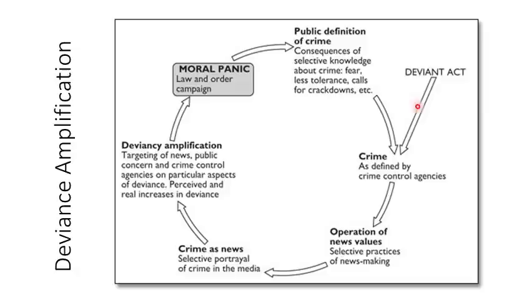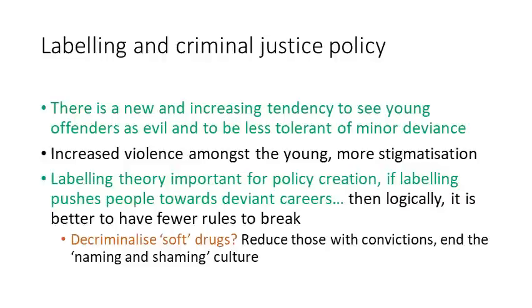At the same time, the demonising of the mods and rockers as folk devils caused further marginalisation of these groups and resulted in yet more deviant behaviour on their part. If we need to visualise the deviancy amplification spiral, it begins with a deviant act — the original act of deviancy — ultimately leading to it being defined as a crime. The news then picks up on this and begins to report it in a particular way. This leads to deviancy amplification as more people become aware and begin to engage in copycat behaviour. A moral panic occurs amongst moral entrepreneurs, the state intervenes giving new powers to the police, a crackdown occurs, and ultimately the process begins again.